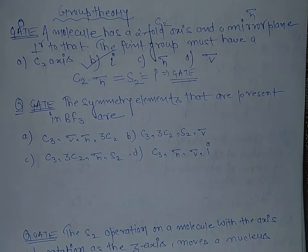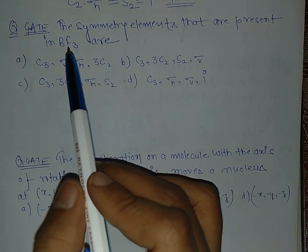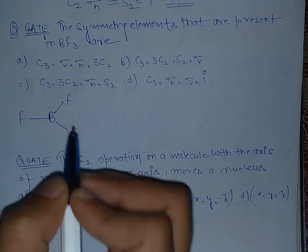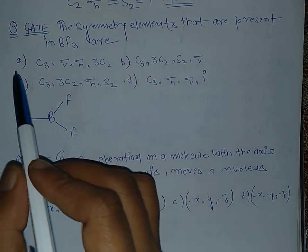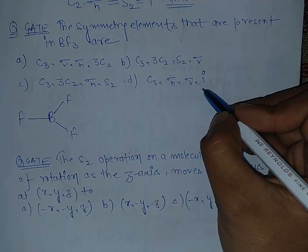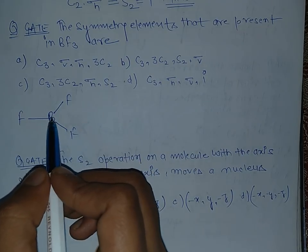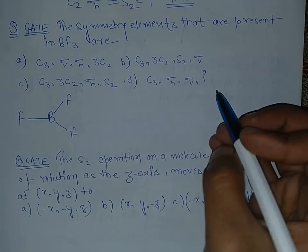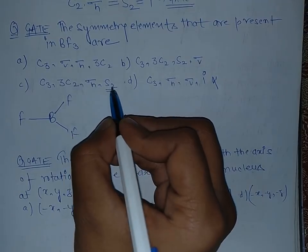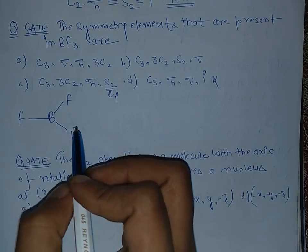Now in the second question we have a BF3 molecule - this is B, this is F, F, and this is F - and we have to tell what are the symmetry elements. This question is very easy. In the fourth option there is an i, center of symmetry, and by no means is there a center of symmetry in this BF3 molecule, so this is a wrong answer. Now come to the C part. I just told you that S2 is equivalent to i, so again this molecule does not have center of symmetry, so C is the wrong option.